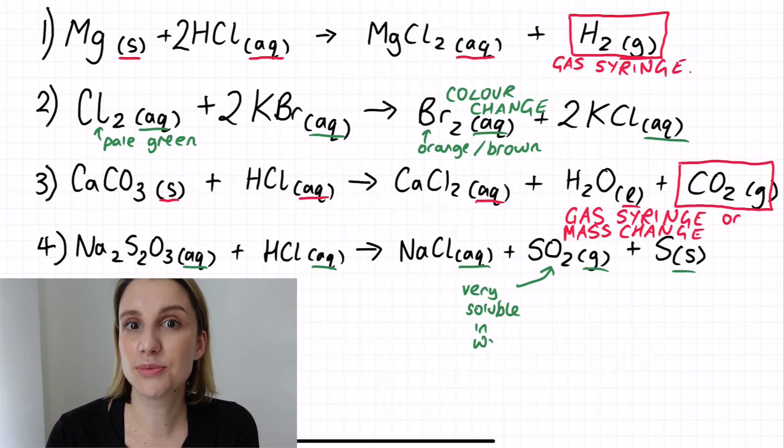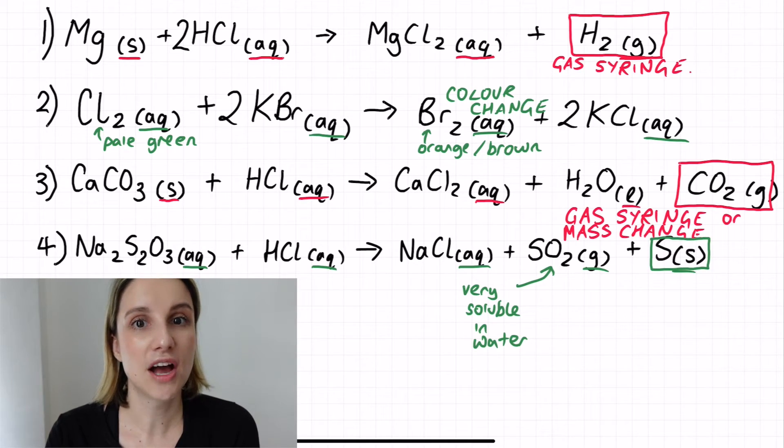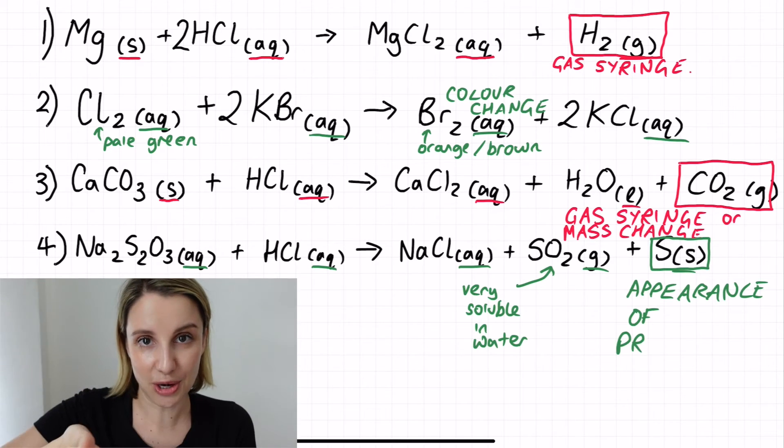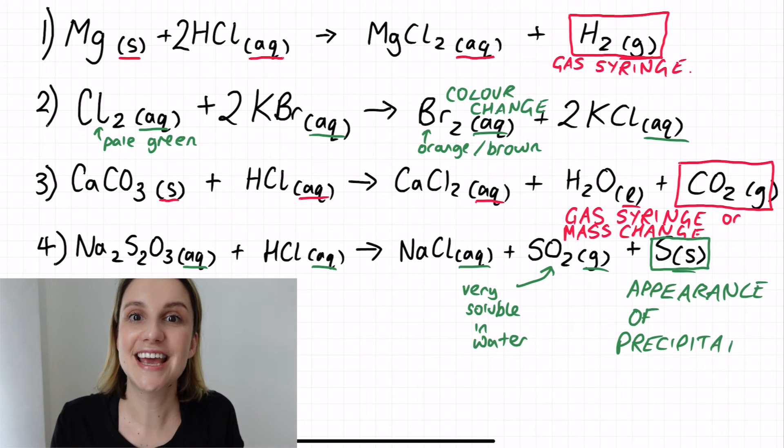Instead what we're going to do is we're going to monitor the appearance of the sulphur precipitate. You can see the solid appearing at the end of the reaction. So if you've got a solid appearing or a precipitate appearing, what we can do is we can monitor how long it takes for the solution to become opaque so that we can't see through it anymore. And to do this we're normally using the disappearing cross method, where we put a little cross on a piece of paper and our vessel on top, and we look down to see how long it takes for us to not see the cross anymore.